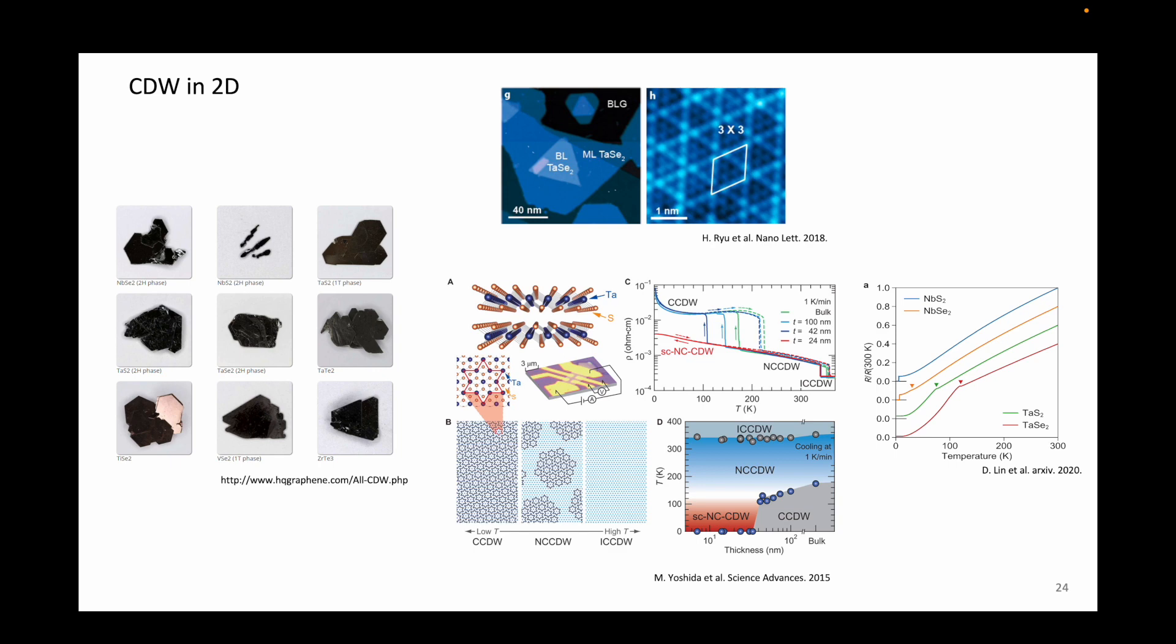Among these, tantalum disulfide and tantalum diselenide are archetypal systems which show pronounced charge density wave transitions. In particular, this 1T phase of tantalum disulfide has several transitions including the incommensurate charge density wave, nearly commensurate charge density wave, and commensurate charge density wave. These terms will be explained later.